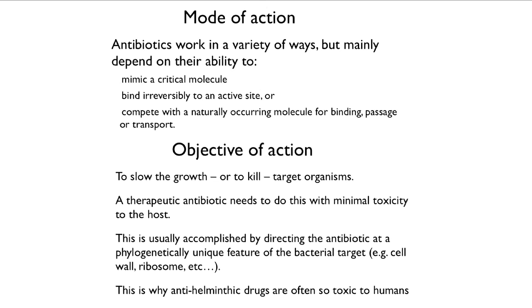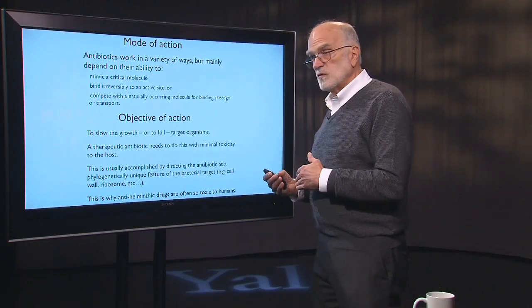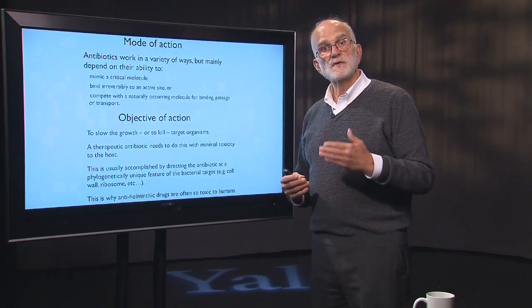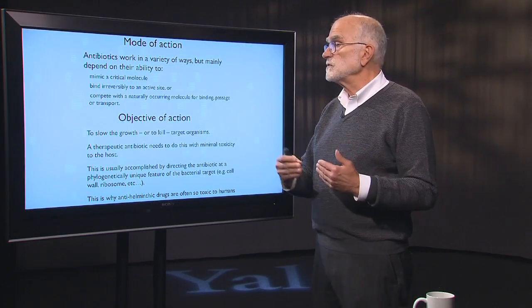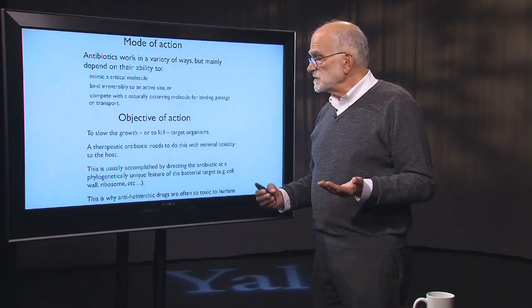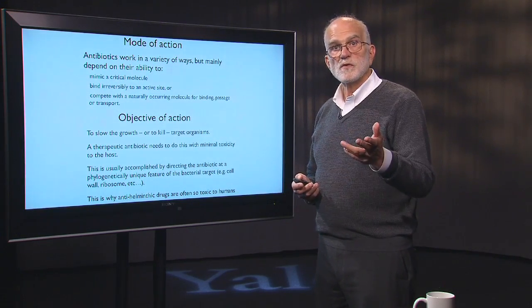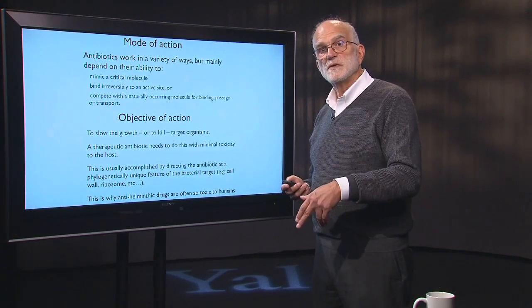Now that's why anti-helminthic drugs are often so toxic. Helminths are worms — they're eukaryotes, and their cells are very much like our cells. If we want to poison a worm, we have to do it in a way that is very likely also to be poisoning the human. So basically worm therapy is a case of trying to kill the worm before you kill the patient.